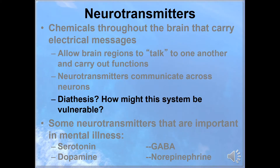Go back to our discussion on the diathesis stress model and think about how the system might be vulnerable. An example would be an individual who has a predisposition to making too little of a particular neurotransmitter. They function fine and they're doing well, and there'd be no reason to even know that they had this predisposition until they encounter a stressor event. Once they encountered the stressor event, the fact that they had improper neurochemicals now contributes to developing PTSD. And without having encountered that stressor, we would never have known that there was a vulnerability already in place with the neurotransmitters. Both of them together are the reason why they've developed PTSD.